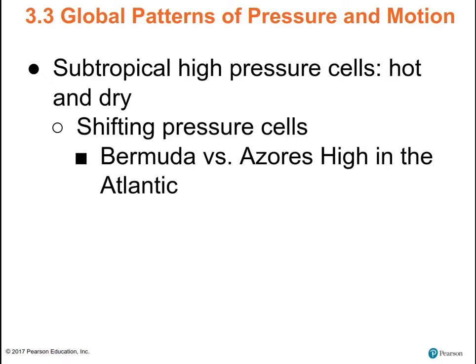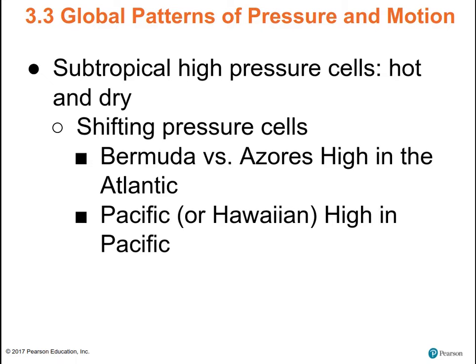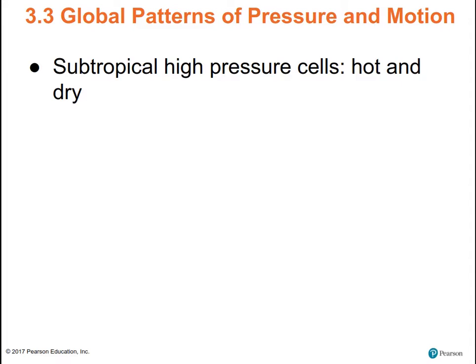The Bermuda and Azores high are the same high-pressure system — it just has different names depending on whether it's in the eastern or western Atlantic. The Pacific or Hawaiian high — you can call it either one. All those shift north and south with the sun. The eastern sides of subtropical high pressure cells are drier.